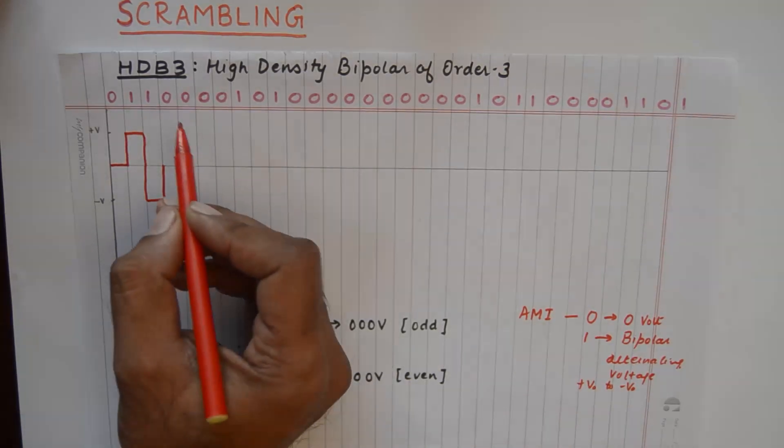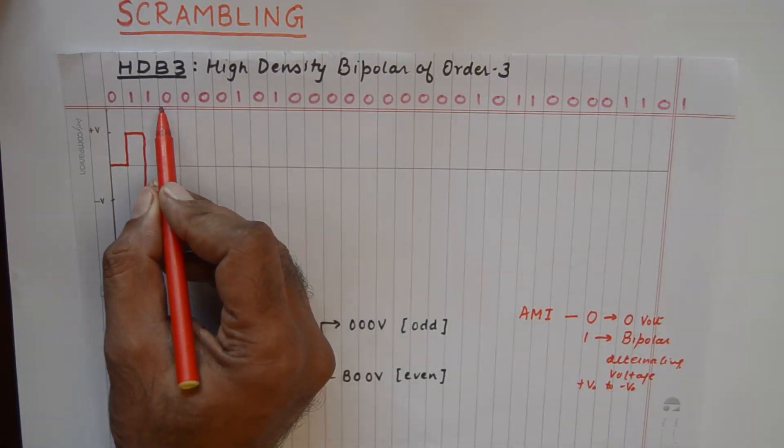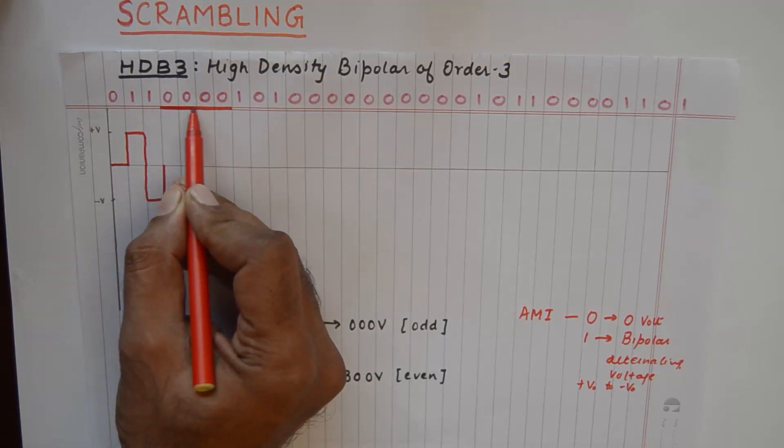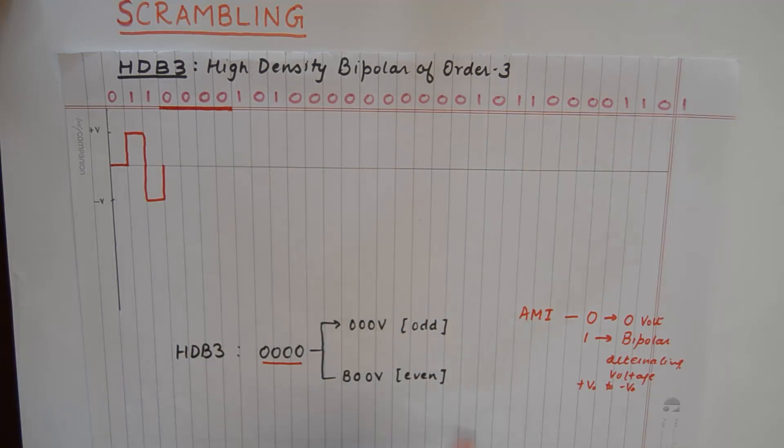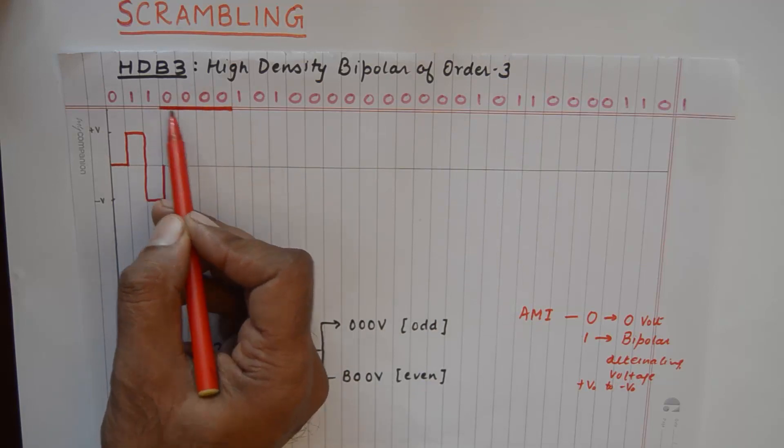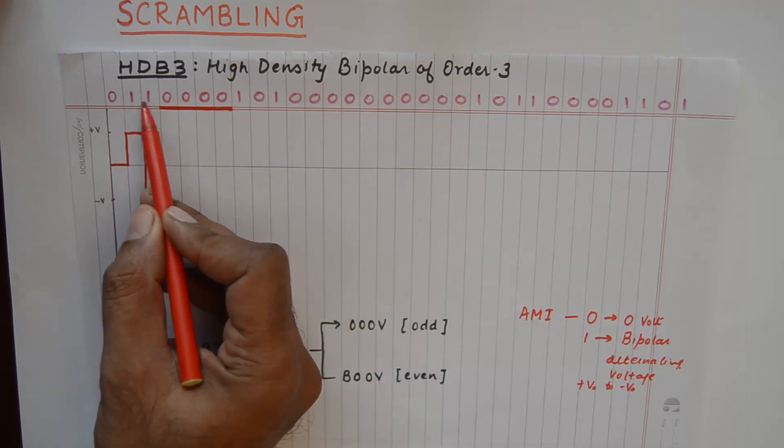Now I will tell you with this example. So we are starting to encode these four zeros. We are wishing to encode these four zeros. So we will see how many number of ones were preceding this case. In this case we had two number of ones.